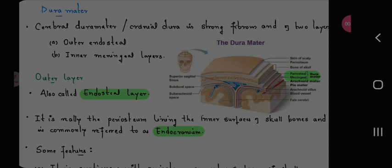And of two layers: outer endosteal and inner meningeal layer. Superior sagittal sinus, subdural spaces, and subarachnoid space. Skin of the scalp, periosteum, bone of the skull, periosteal meningeal dura matter, arachnoid matter, pia matter, arachnoid villus, blood vessels, and falx cerebri.